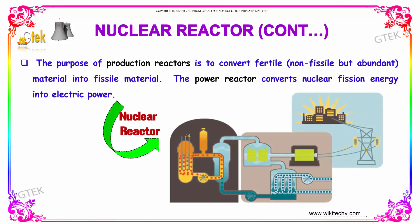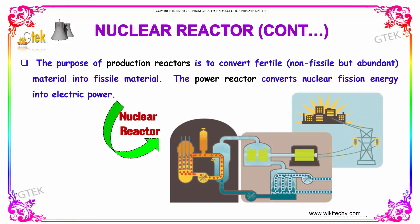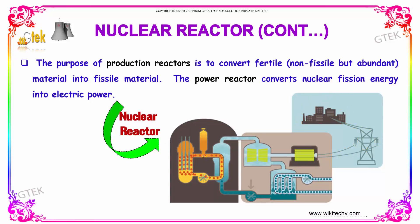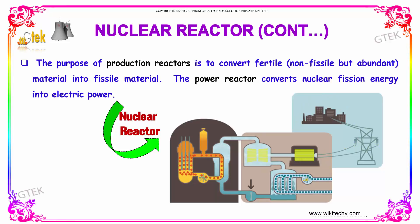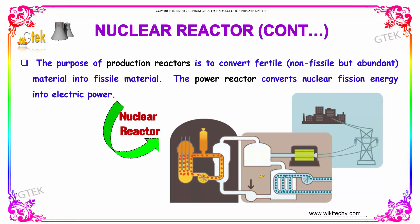The purpose of a production reactor is to convert fertile, non-fissile but abundant material into fissile material. The power reactor converts nuclear fission energy into electrical power.